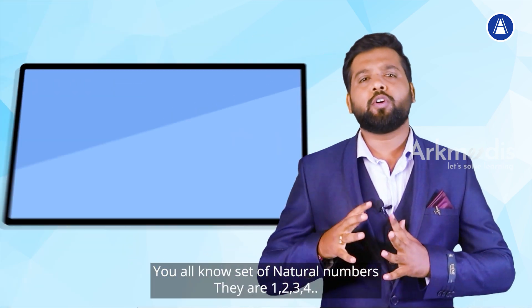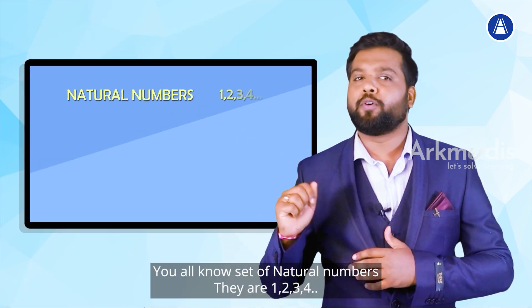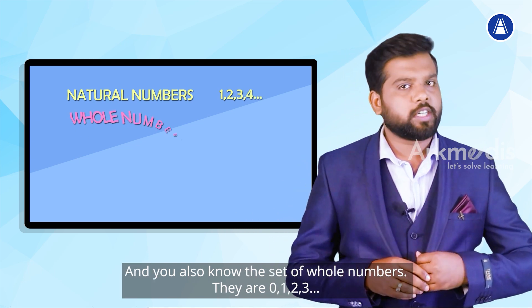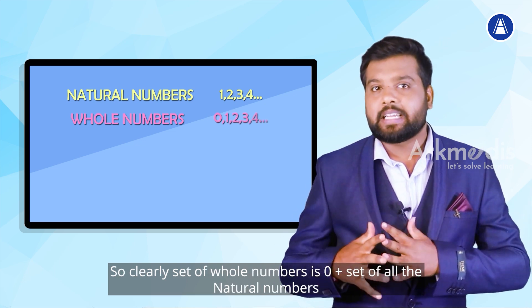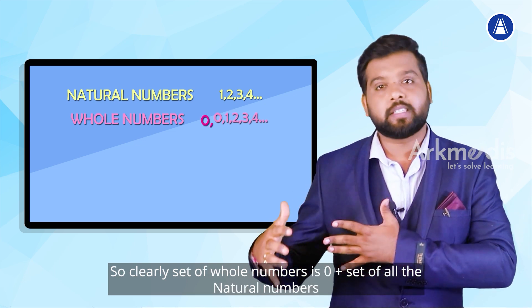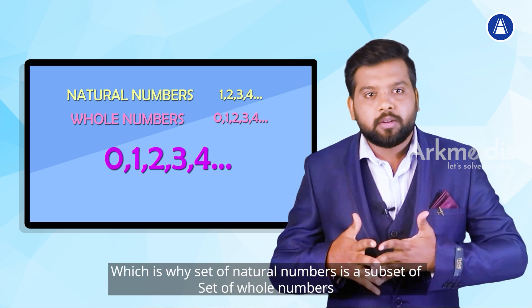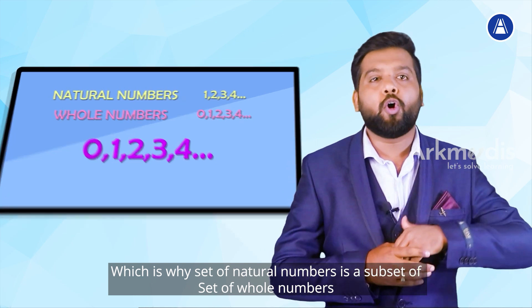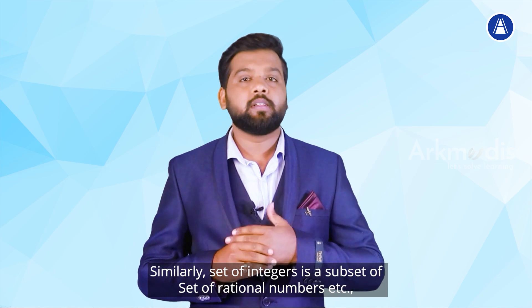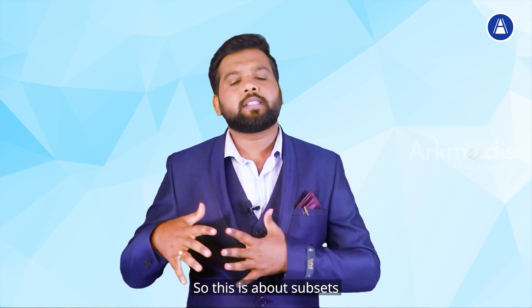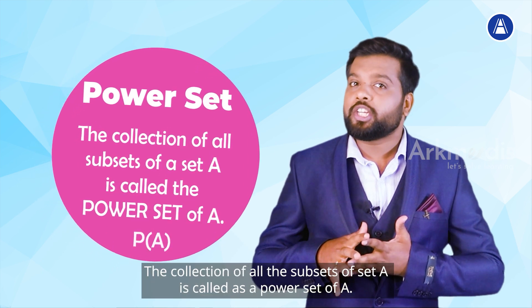For a more mathematical example: the set of natural numbers is 1, 2, 3, 4, and so on, and the set of whole numbers is 0, 1, 2, 3, and so on. Clearly, the set of whole numbers is zero plus the set of all natural numbers, which is why the set of natural numbers is a subset of the set of whole numbers. Similarly, the set of integers is a subset of the set of rational numbers, and so on.